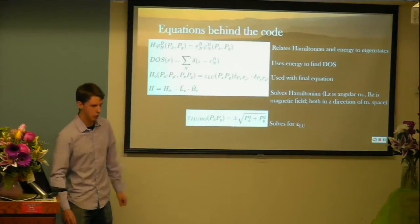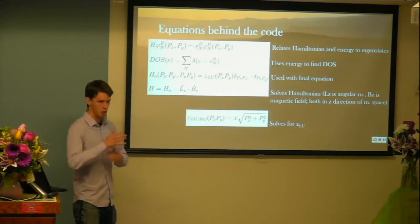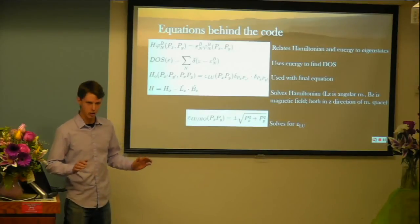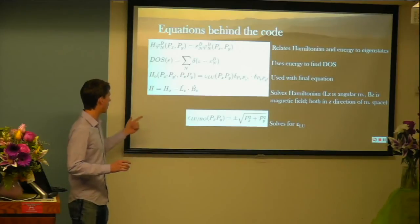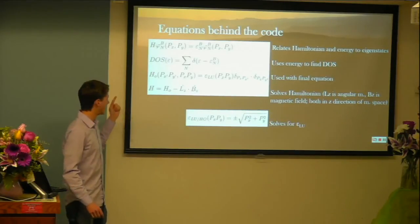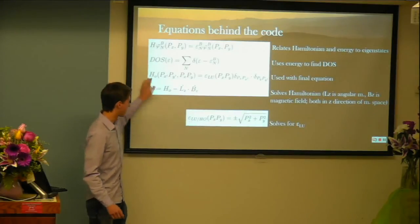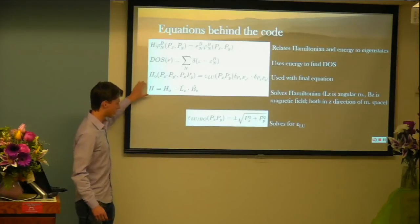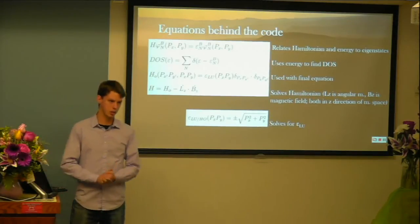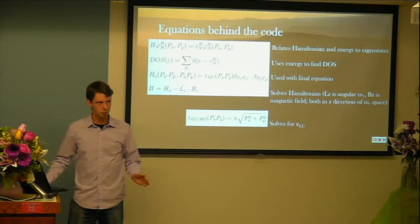A MATLAB code was used for this experimentation. Eigenstates found through the code were converted to density of states across energy, and then that was used to determine if a superconductor could be formed based on how the density of states reacted. The first equation relates the Hamiltonian to energy and eigenstates. The second equation uses the energy found in the first equation to find the density of states. The Hamiltonian equation includes L-sub-z as angular momentum and V-sub-z as magnetic field, both in momentum space. LU and HO are the lowest unoccupied and highest occupied molecular orbitals — calculated using positive and negative values respectively.